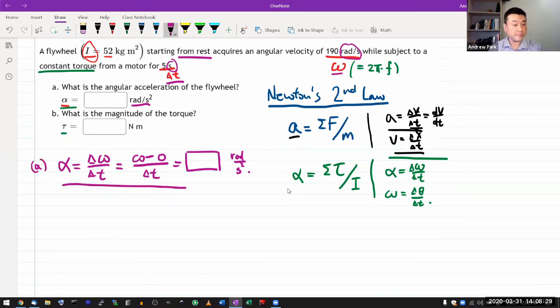Now for part B, it's asking for what is the magnitude of the torque. And this is where you remember Newton's second law. You have this relationship here. And it looks like I was given everything that we needed.